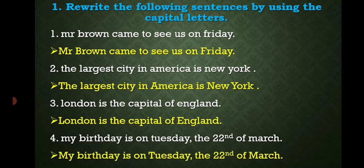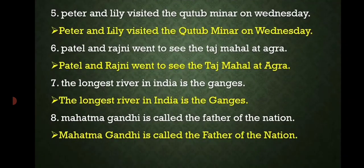'My birthday is on Tuesday, the 22nd of March.' — Begin with capital 'My', 'Tuesday' is a day of the week, and 'March' is a month — all begin with a capital letter. 'Peter and Lily visited the Qutub Minar on Wednesday.' — 'Peter', 'Lily' are names of persons, 'Qutub Minar' is a place, and 'Wednesday' is a day — all begin with a capital letter.